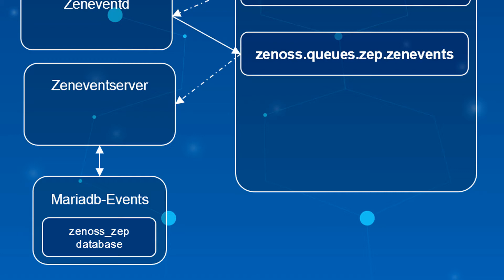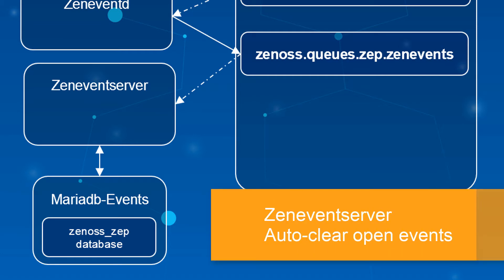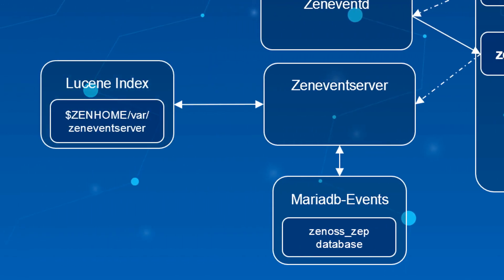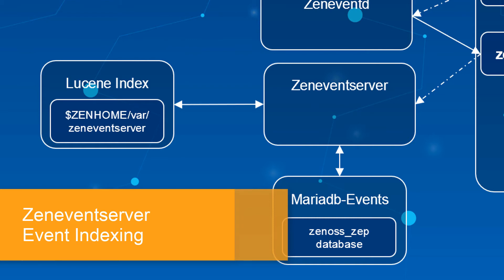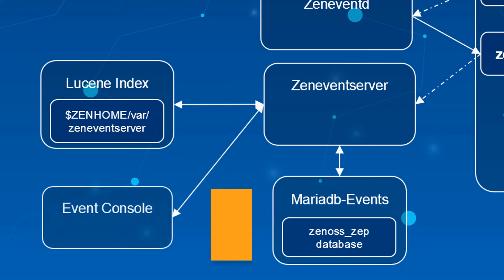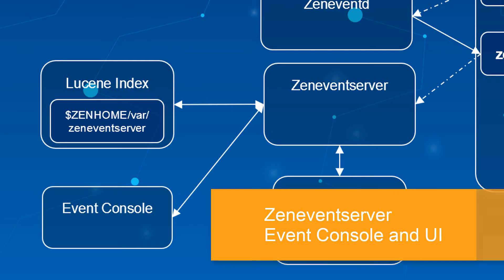If the event is a severity zero clear event that matches an existing event, ZenEventServer will perform an auto-clear correlation. This is the mechanism by which a ping up event clears a ping down event, among others. Third, in addition to storing events for retrieval and analysis, ZenEventServer is also responsible for maintaining its own index of the events database. This provides fast lookup, filtering, and sort capabilities when viewing the event console. Fourth, the actual event console itself, along with other event-based UI elements, are served by the ZenEventServer daemon.